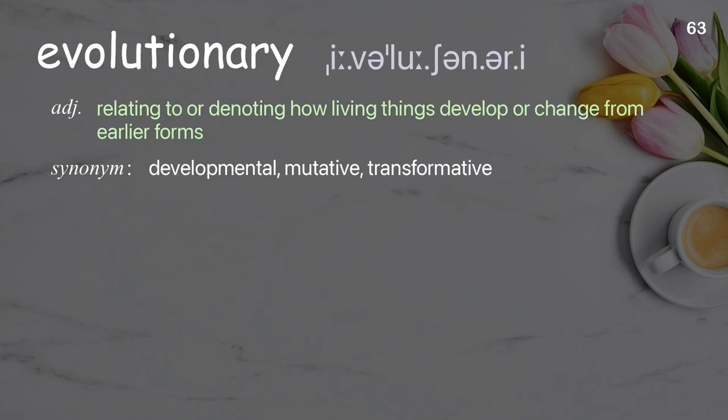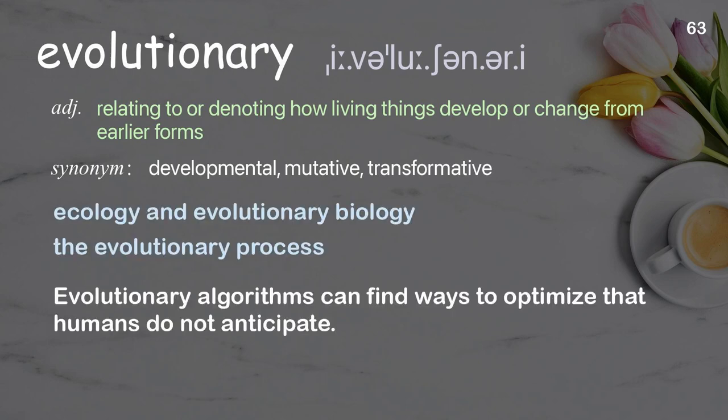Evolutionary: relating to or denoting how living things develop or change from earlier forms. Examples: ecology and evolutionary biology; the evolutionary process. Evolutionary algorithms can find ways to optimize that humans do not anticipate.